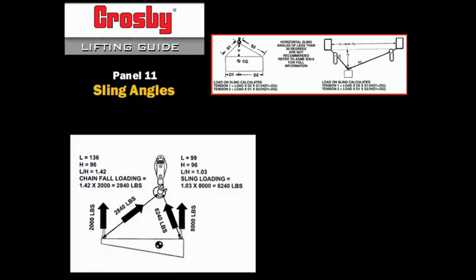The tension of the sling will be the vertical load of 8,000 pounds times the length over height multiplier of 1.03 or 8,240 pounds at an angle greater than 60 degrees.